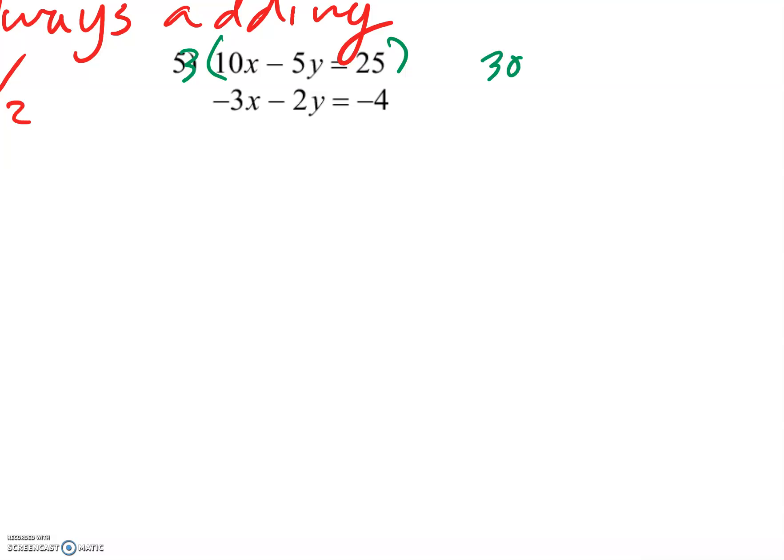That's going to give me 30x minus 15y equals 75. The main thing is I'm getting a 30x, and when I multiply this by 10, I'm getting a negative 30x. That's the key idea—that's why I multiply it by what I did. I've got to distribute that to everything, giving negative 30x minus 20y equals negative 40.